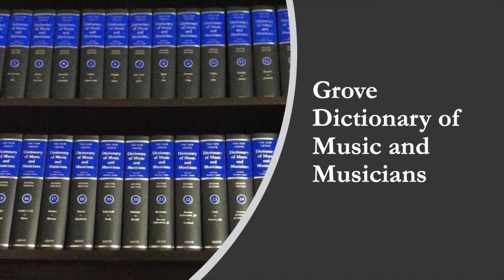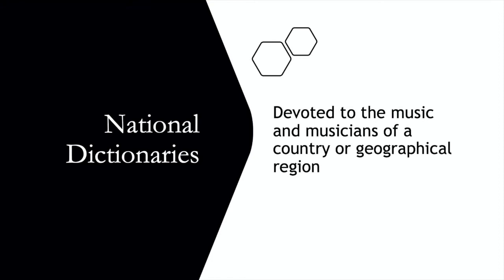Please refer to the video on Grove Music Online for more information on how to use this core research tool. Grove is a great go-to resource when researching a topic, but there are many more specific dictionaries in the library that might be more appropriate for a specific information need. National dictionaries are devoted to people, places, and events from a particular country. One of the drawbacks of using Grove is that it has a very American focus, and so sometimes composers from other countries are missing.